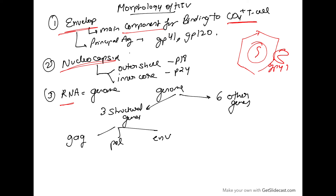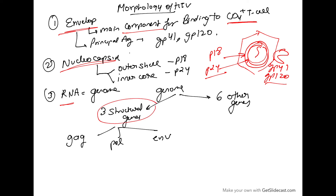The envelope contains antigens such as GP41 and GP120. The nucleocapsid has an outer shell with the antigen p18, and an inner core with the antigen p24. The RNA genome contains three structural genes — gag, pol, and env — and six other genes.